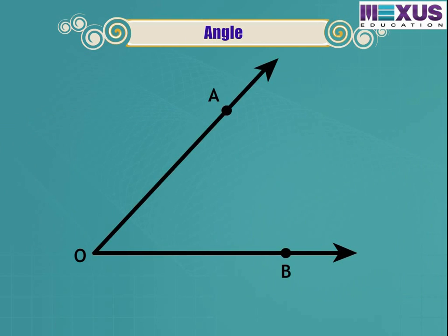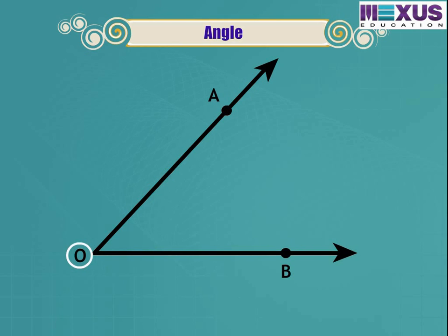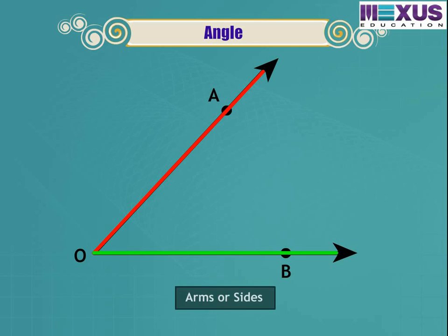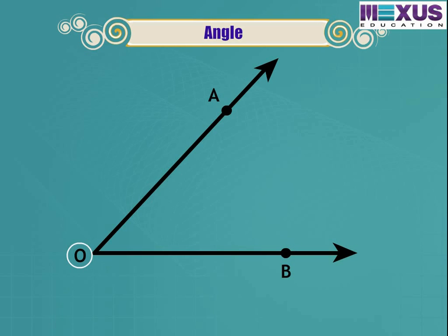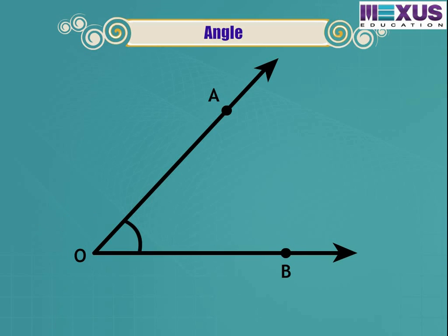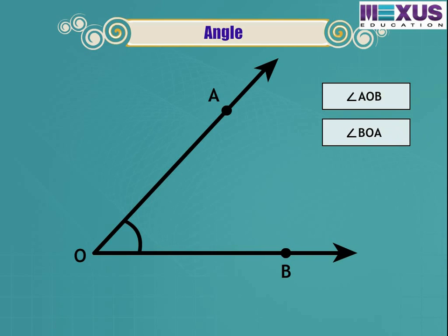Imagine two rays, OA and OB, with a common end point O. The rays OA and OB are said to form an angle. These two rays forming an angle are called the arms or sides of the angle. The common end point O is called the vertex of the angle. The angle is read as angle AOB or angle BOA, and is denoted as angle AOB, angle BOA, or simply angle O.